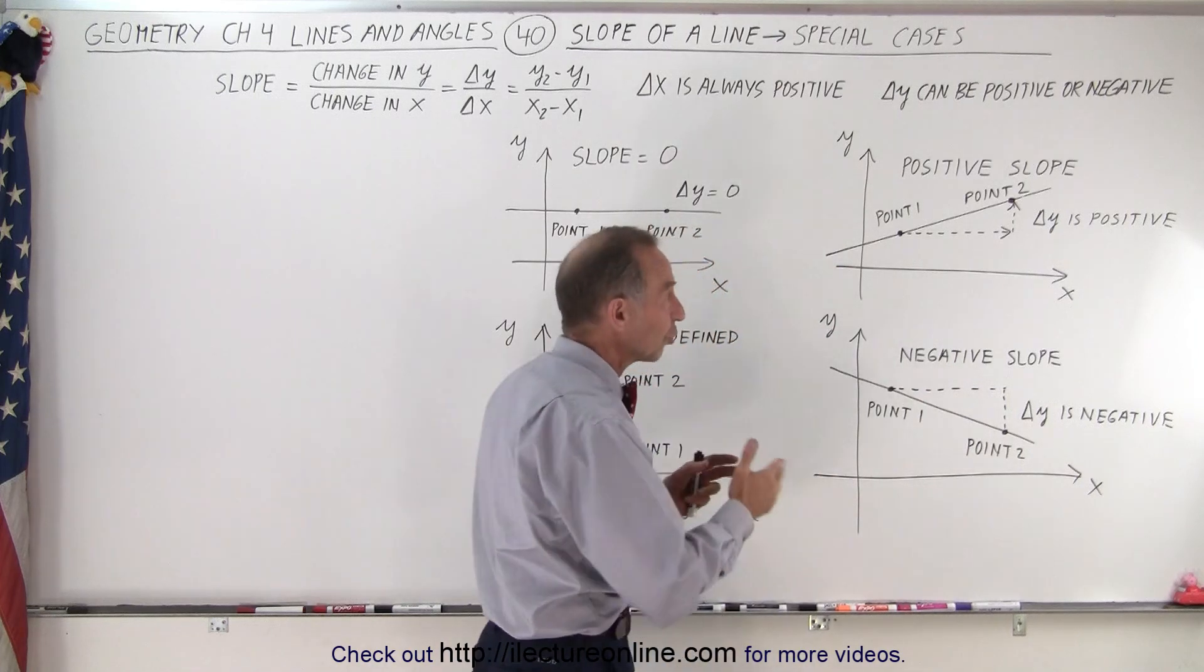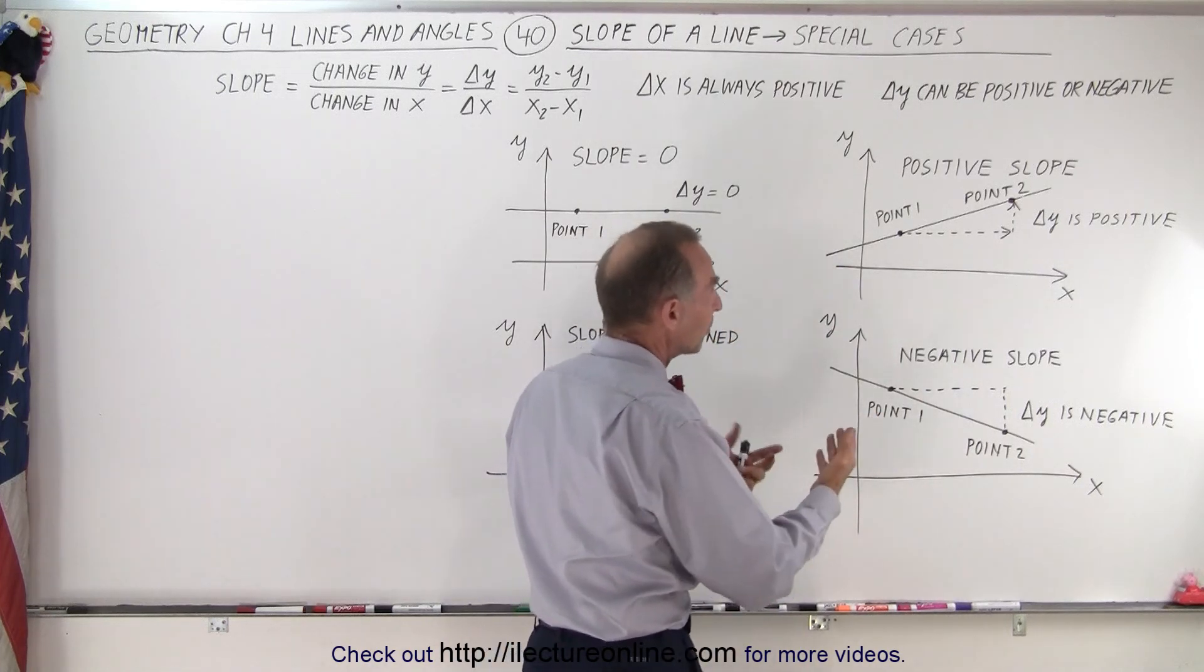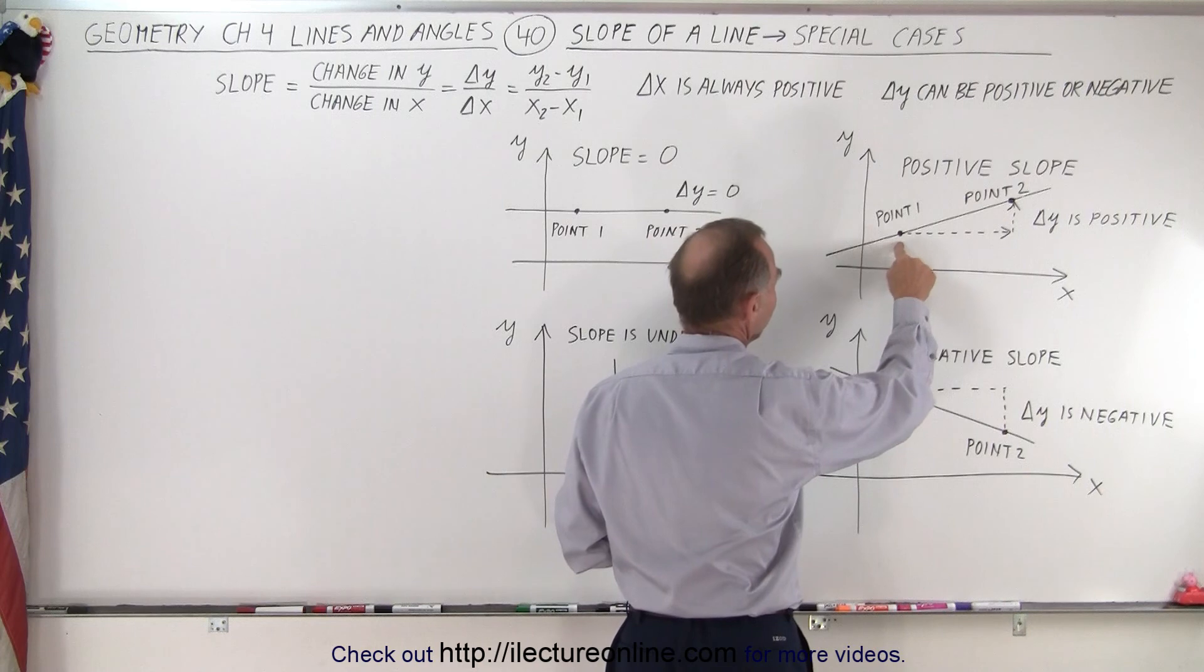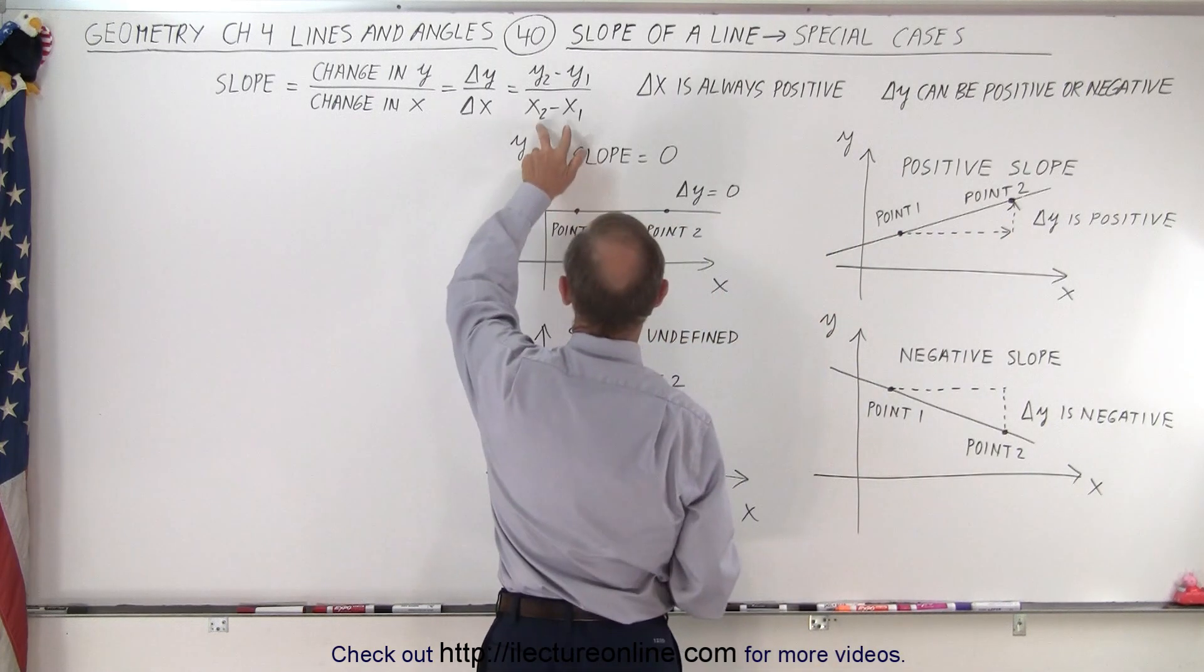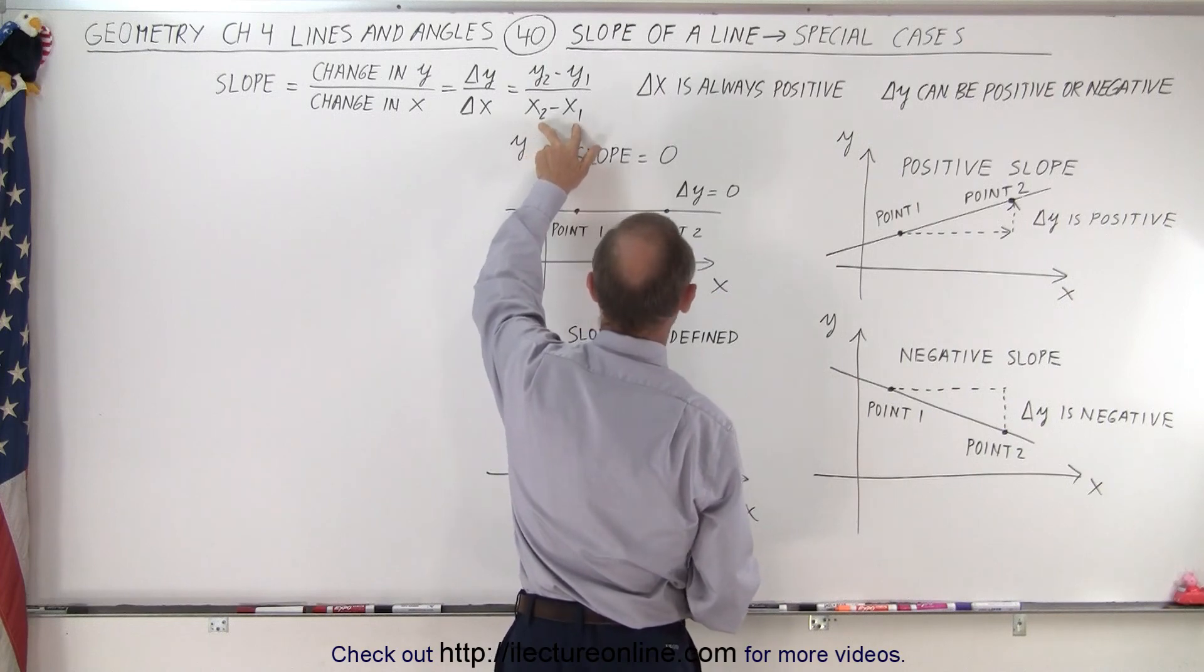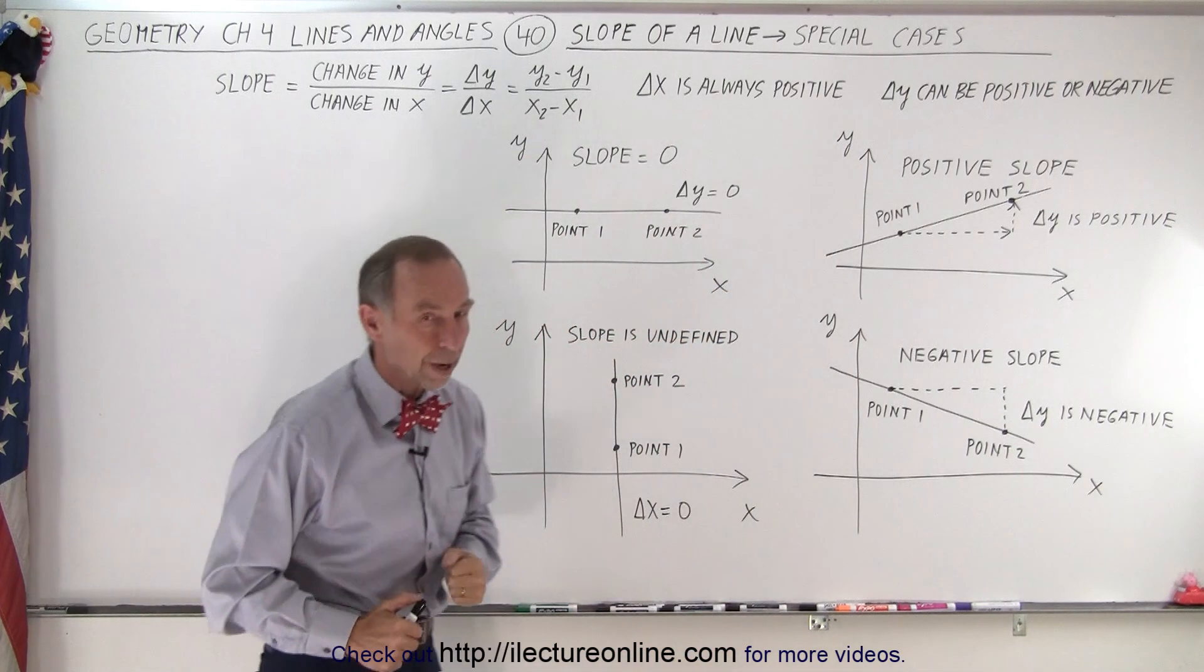Notice that the change in the horizontal direction is always positive, because we always travel from the left to the right, from a smaller number to a bigger number, such that the denominator, X2 minus X1, is always going to be positive.